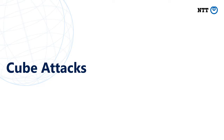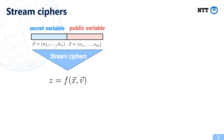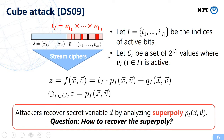Let's start the main talk. First I want to explain what cube attack is. The main target of cube attack is stream ciphers, and the input of a stream cipher is secret variables and public variables. z is the first bit of the keystream, and function f is the stream cipher — it's a public function. In cube attack, we first prepare the indices of active bits described by I, and c_I is the set of 2^|I| values where v_i is active. Assuming the function f is decomposed like this, the sum of z over the cube is equal to the superpoly p_I. Attackers can recover secret variables x by analyzing the superpoly, but to do so, we need to recover the superpoly in advance, and the superpoly must be simple.